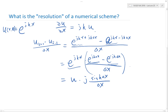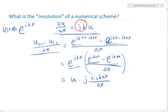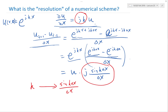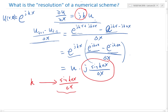The imaginary part is actually j times sine of k delta x divided by delta x. So if you compare the derivative from this scheme to the analytical derivative, it is as if the oscillation speed of wave number k has been translated into an oscillation of sine(k delta x) divided by delta x. This is the so-called modified wave number.